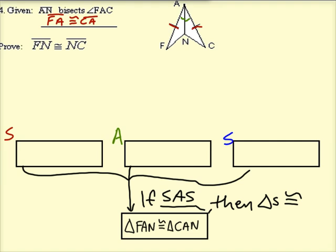Hopefully this stuff is starting to look familiar to you now. So the red sides, that was FA and CA. And from those congruence marks on the drawing, that's just given information for us.